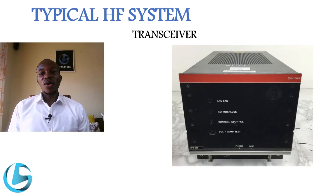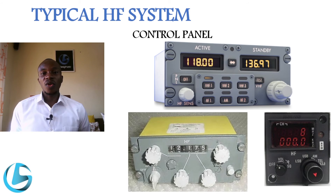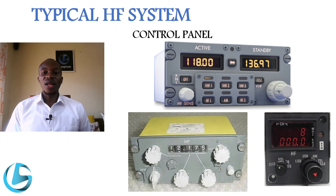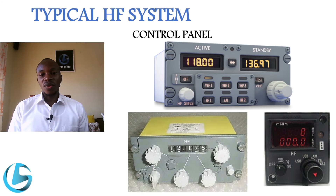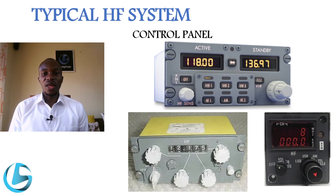The next component found on an HF communication system is the control panel. The control panel is found in the cockpit of an aircraft. It can be installed on the overhead panel on some aircraft, or on the main instrument panel or on the pedestal, just like the VHF control panel. It is used to switch the HF communication system on or off, and for frequency selection.